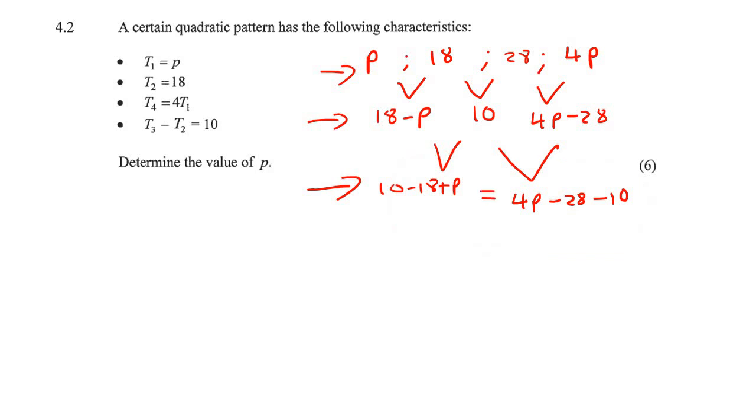So we can make these two expressions equal to each other. So we say 10 minus 18 plus P equals 4P minus 28 minus 10, and now we just solve for P.